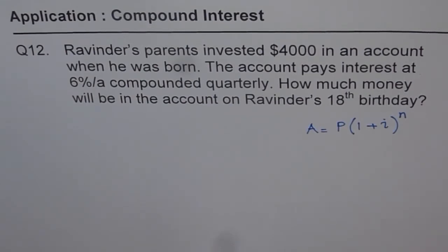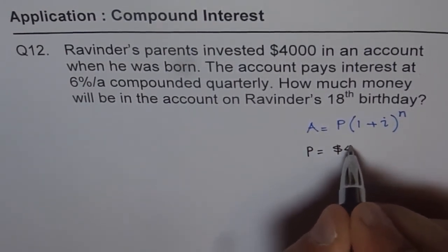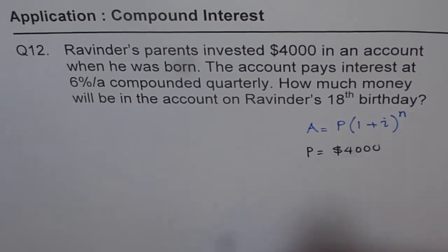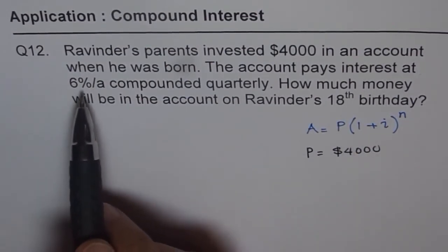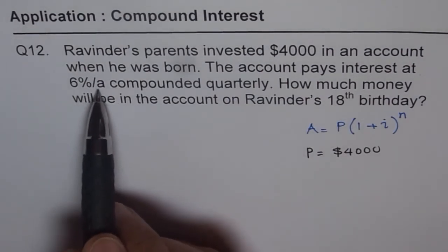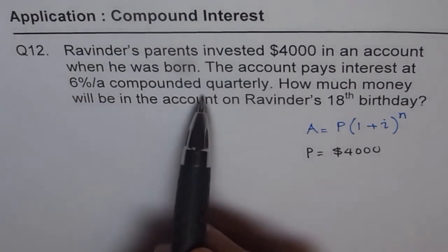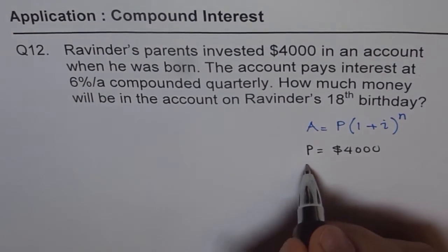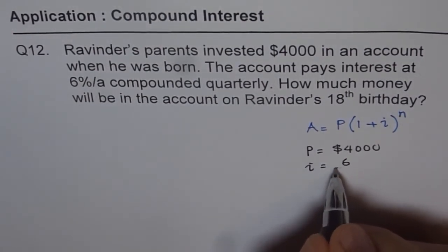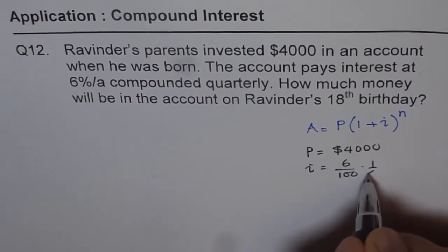In our question we are given P which is $4,000. The interest rate: we are given 6% compounded quarterly, that means 6% per annum compounded quarterly. So we have to find 1 fourth of 6% for each compounding period. So i equals 6 over 100, that is 6%, compounded quarterly means divided by 4.